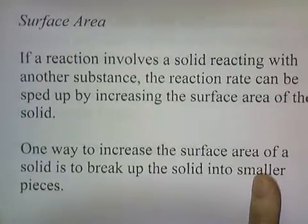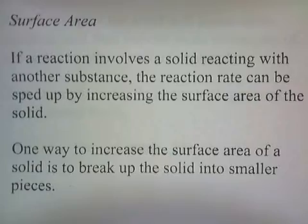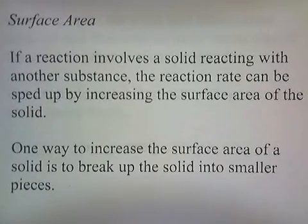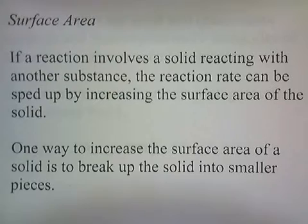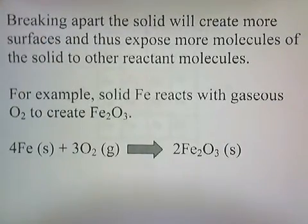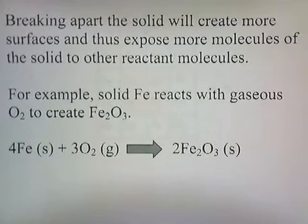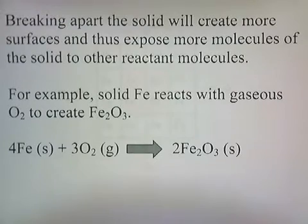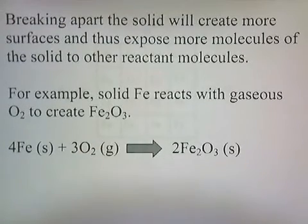Surface area. If a reaction involves a solid reacting with another substance, the reaction rate can be sped up by increasing the surface area of the solid. One way to do this is to break the solid into smaller pieces, creating more surfaces and exposing more molecules of the solid to other reactant molecules. For example, solid iron reacts with gaseous oxygen to create iron three oxide, Fe2O3 — which is basically rust.